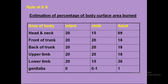For lower limbs, because muscle mass and surface area are higher, more percentage is given: front of lower limb = 18% (front of thigh 9%, front of leg 9%), back of lower limb = 18% (back of thigh 9%, back of leg 9%). Genitalia = 1%. All these add up to 100%. If the burn surface area is greater than 40 to 50 percent, there is high risk of death — morbidity and mortality will be high.